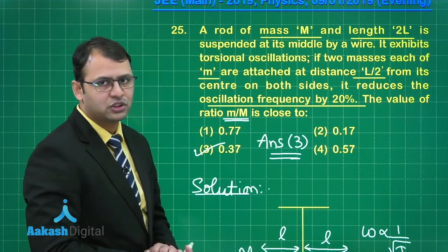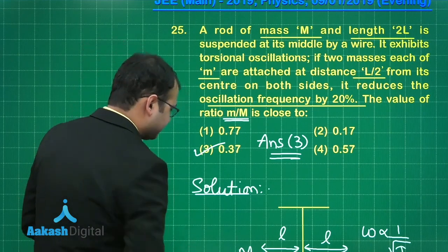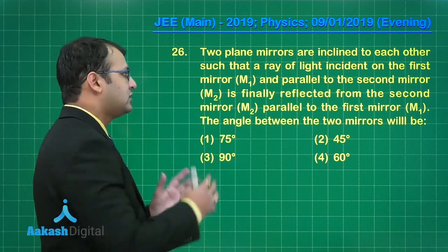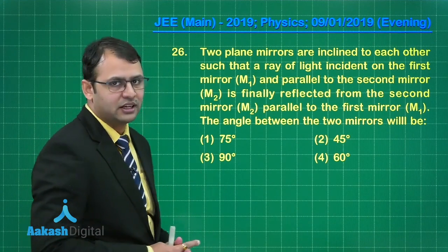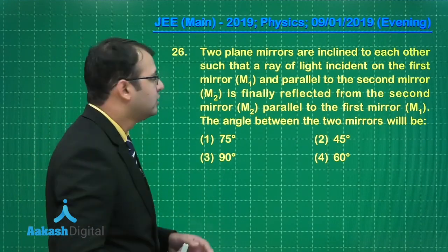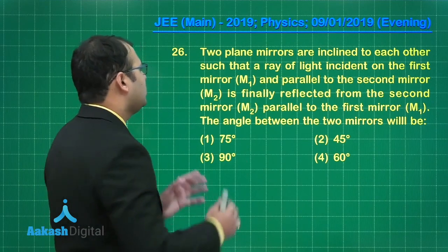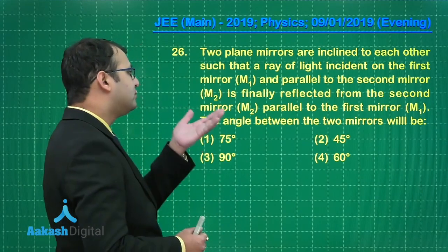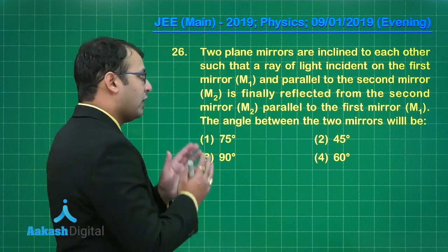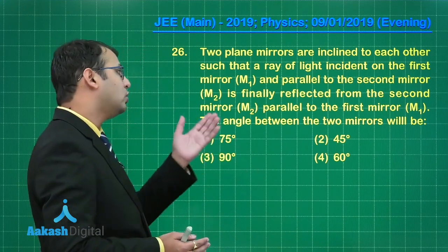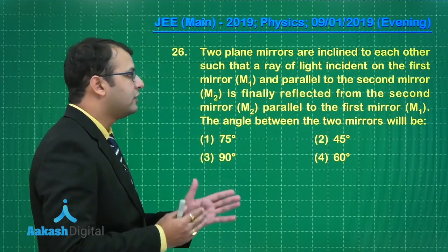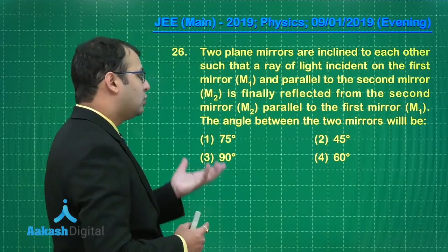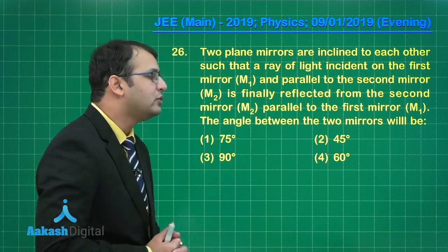Now let's move on to question number 26. In this question there are two plane mirrors — this question belongs to the section on optics, specifically geometrical optics. Two plane mirrors are inclined to each other such that a ray of light incident on the first mirror M1 is parallel to M2. After reflection from M1 it becomes parallel to M1. We need to find the angle between the two mirrors.